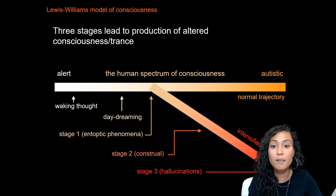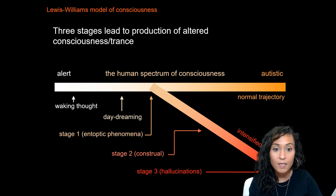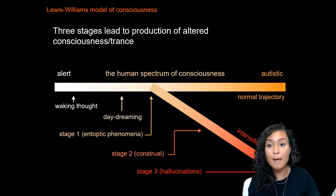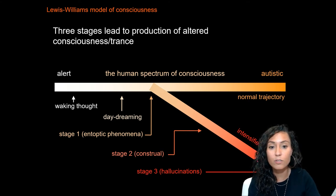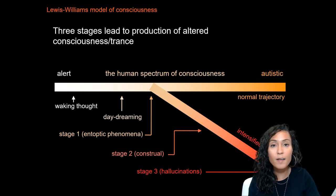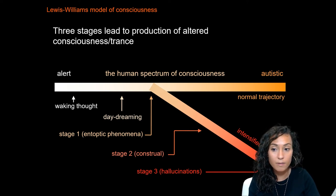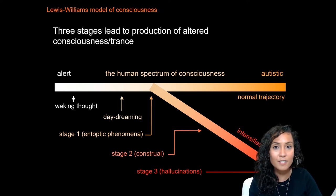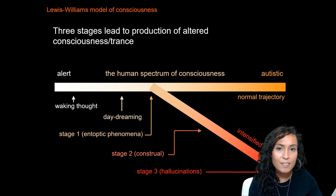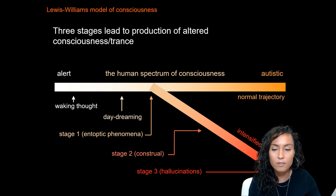Neuropsychological studies of trance states have shown the presence of three overlapping stages in the creation of this altered consciousness: Stage 1, entoptic phenomena; Stage 2, construal; and Stage 3, hallucinations. Let's get into how each of these phases works.